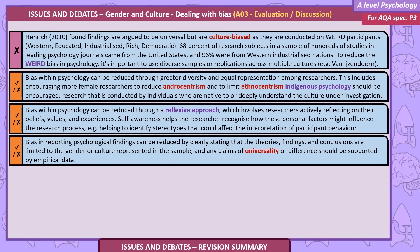Bias can also be reduced through a reflexive approach, which involves researchers actively reflecting on their beliefs, values and experiences. This self-awareness helps the researcher recognise how personal factors might influence the research process — for example, helping to identify stereotypes that could affect interpretation of participant behaviour. Bias in reporting can be reduced by clearly stating that theories and findings are limited to the gender or culture represented in the sample, with any claims of universality supported by empirical data.